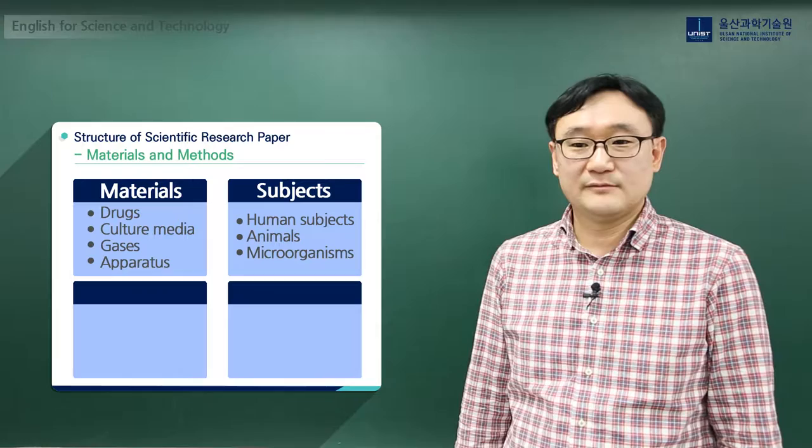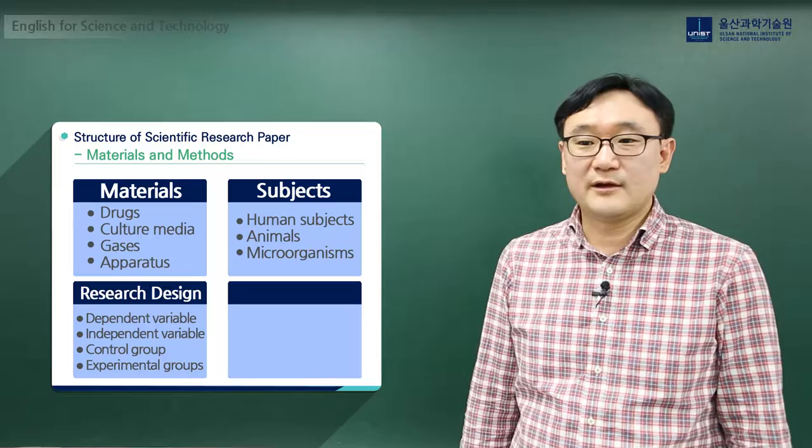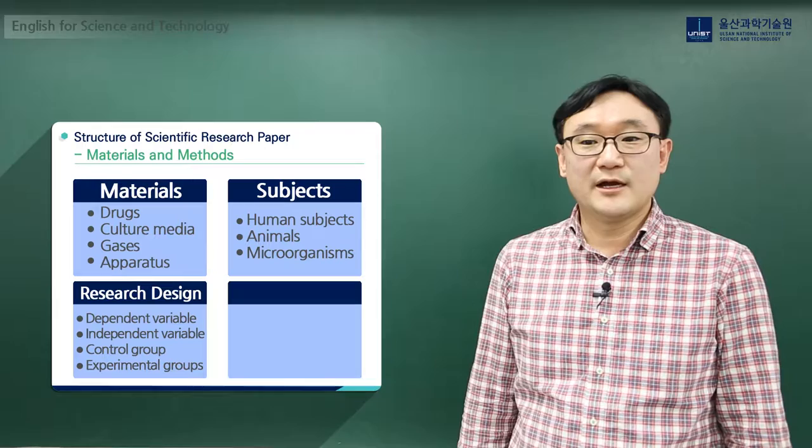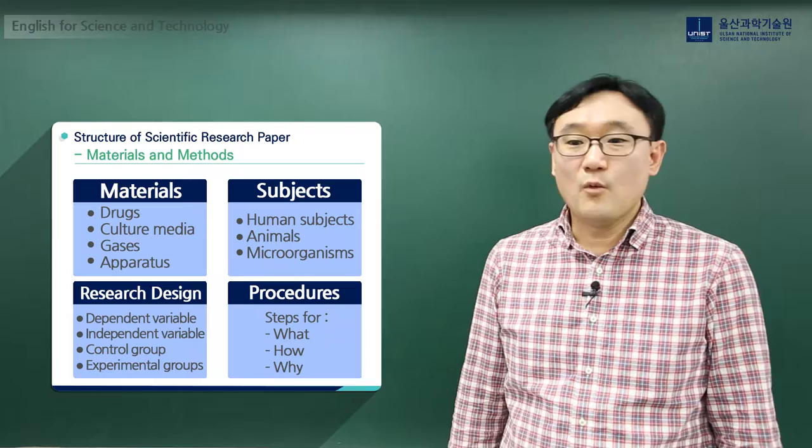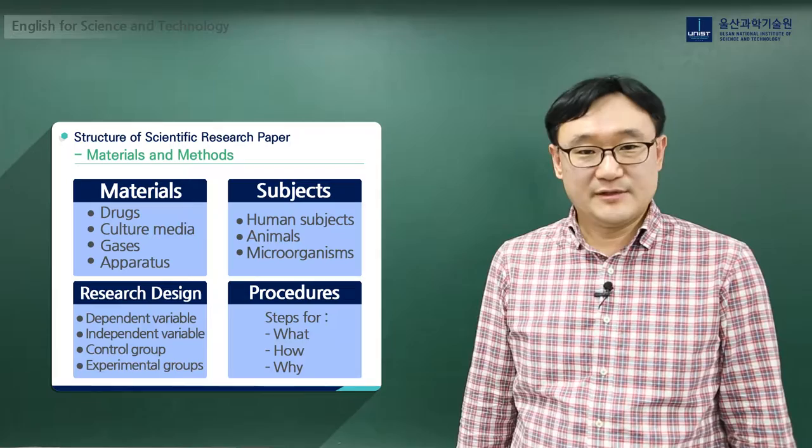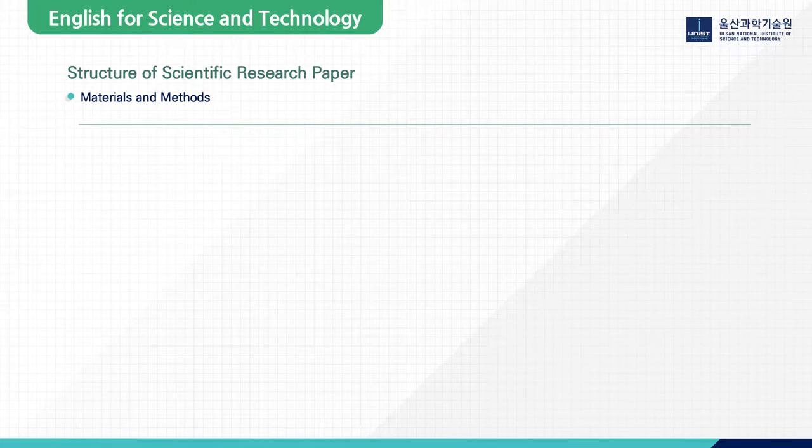Research designs should be included in this section as well. They are dependent and independent variables, experimental and control groups. Finally, procedures of the experiment should be included in this section by explaining what, how, and why you are taking certain steps.